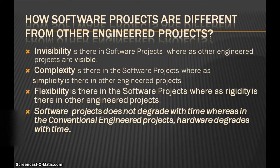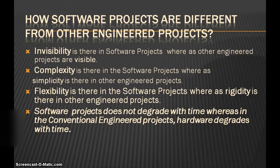How are software projects different from other engineered projects? In software projects, invisibility is there, whereas in other engineered projects, visibility is there — those projects are visible. Software projects are complex, whereas simplicity is there in other engineered projects. Flexibility is there in software projects — we can change according to need — whereas rigidity is there in other engineered projects. Software projects do not degrade with time, whereas in conventional engineered projects, hardware degrades with time.